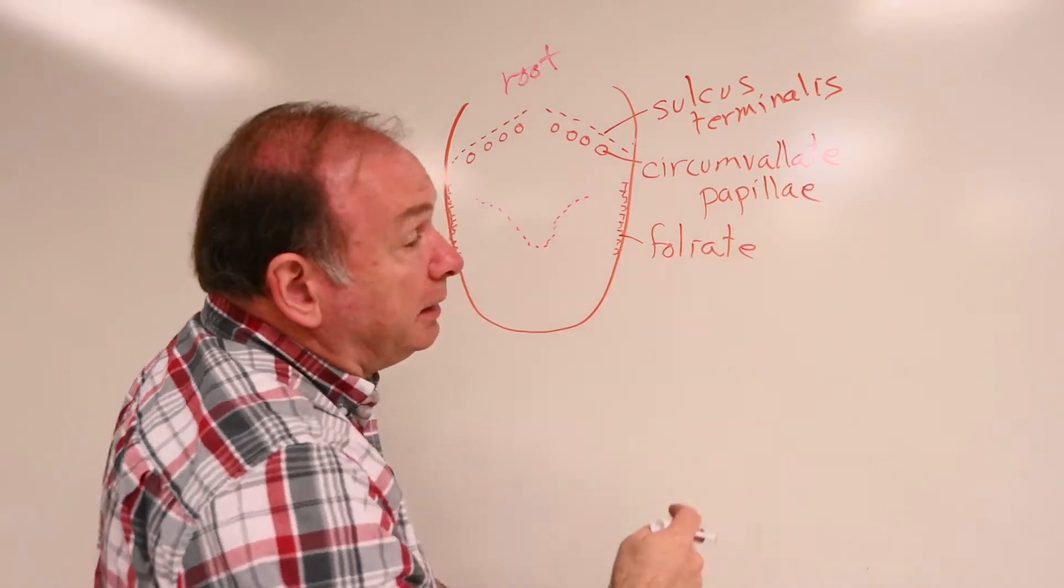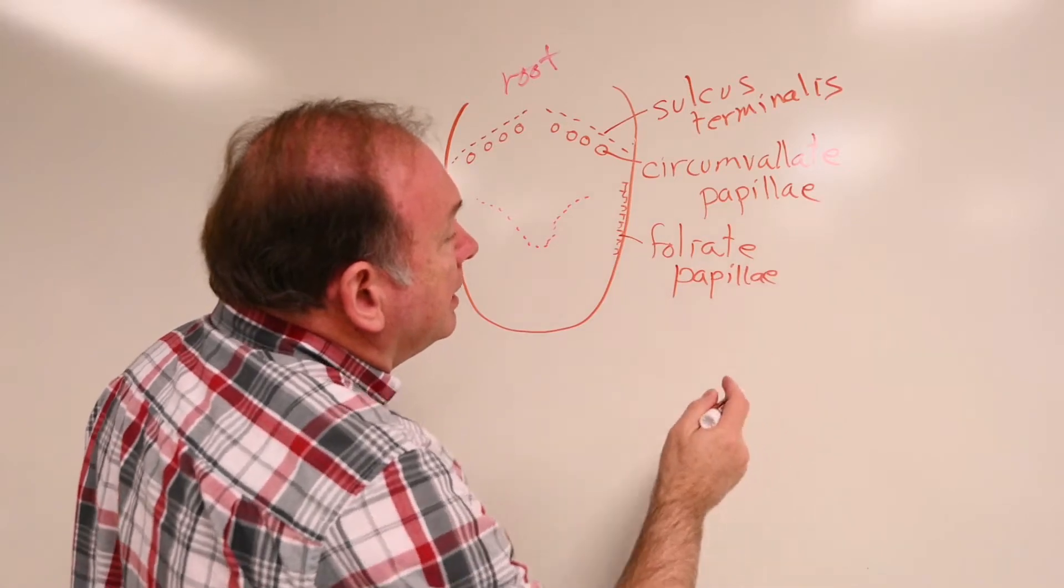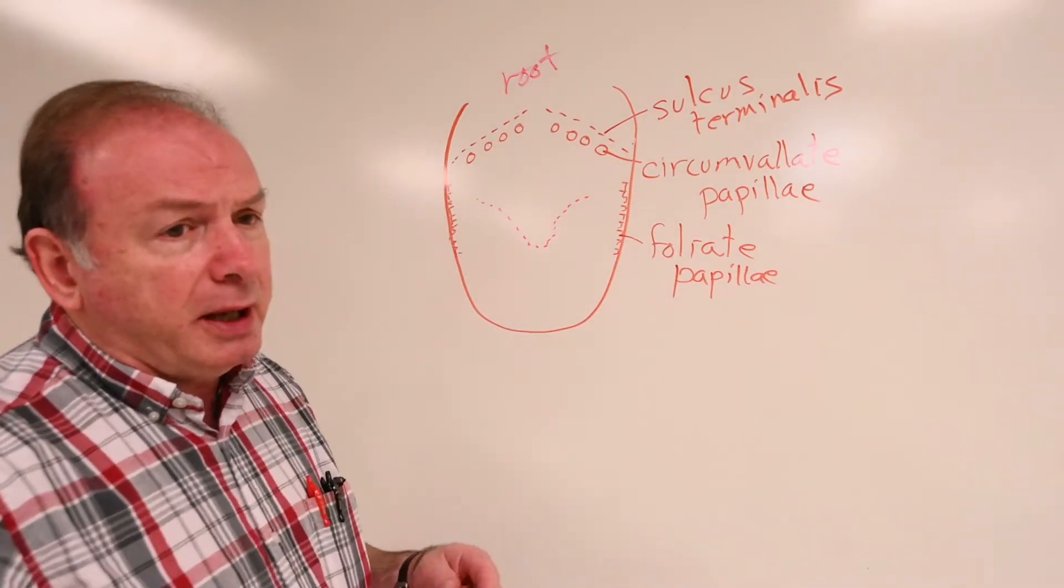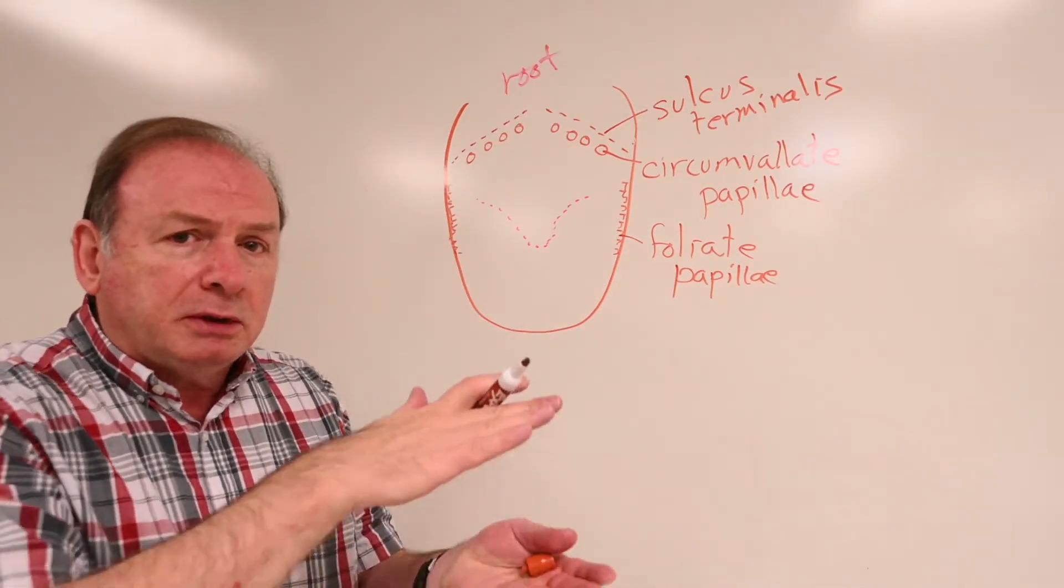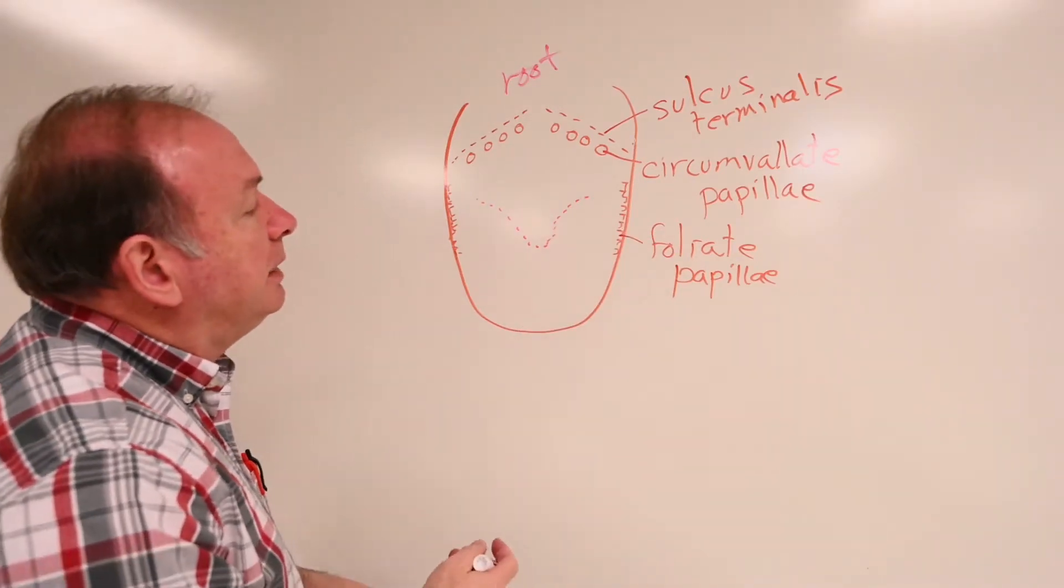And I compare them to like a boat or flattened and broad, and they're more squared off on the end. Foliate papillae.